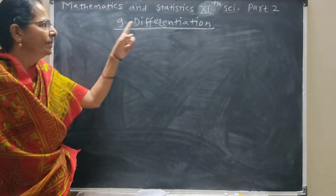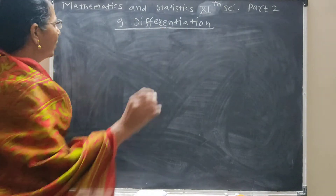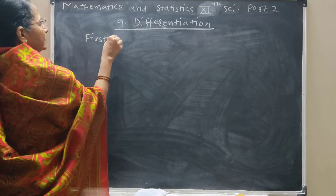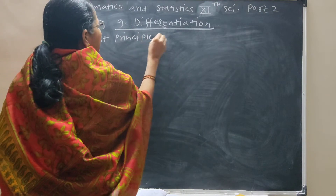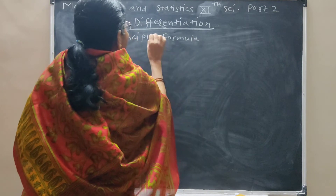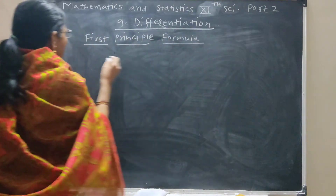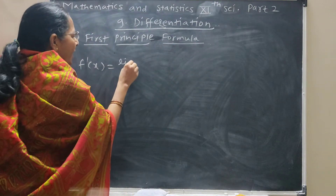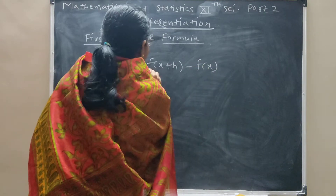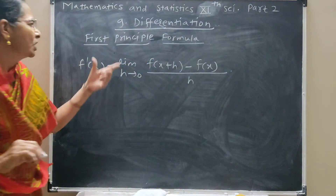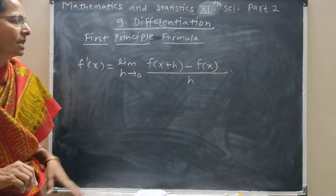Topic number 9: Differentiation. First Principle Formula. The first principle formula is: f'(x) is equal to the limit as h tends to 0 of f(x+h) minus f(x), upon h.